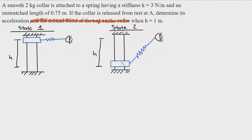We're going to find the acceleration right when the collar has moved from state one to state two, and we're going to look at the different states of this system and treat it in terms of energy. The very first thing I'm going to do is define the point where the collar reaches point C at the bottom as zero potential, meaning it has zero potential energy right when it hits point C.